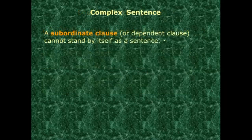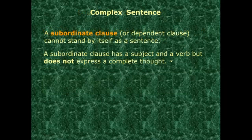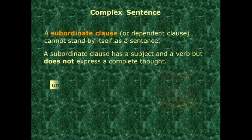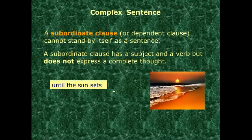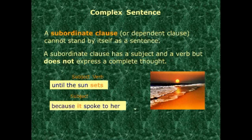Now we go to the second part of our lesson: complex sentences. A subordinate clause — also called a dependent clause — has a subject and a verb, but it does not express a complete thought. Example: 'Until the sunset.' It has a subject and verb, but what happened until the sunset? It's not a complete thought, so we call it a subordinate or dependent clause.